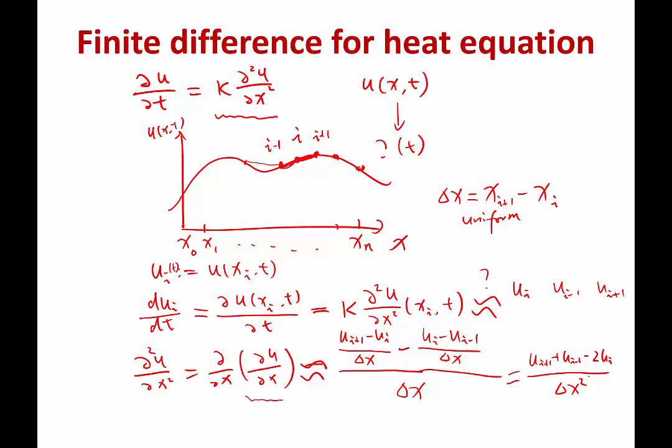Now with that approximation, we get this being left-hand side and this being right-hand side. That's an ODE we can solve. We get dui dt equal to kappa times ui plus 1 plus ui minus 1 minus 2 ui divided by delta x.